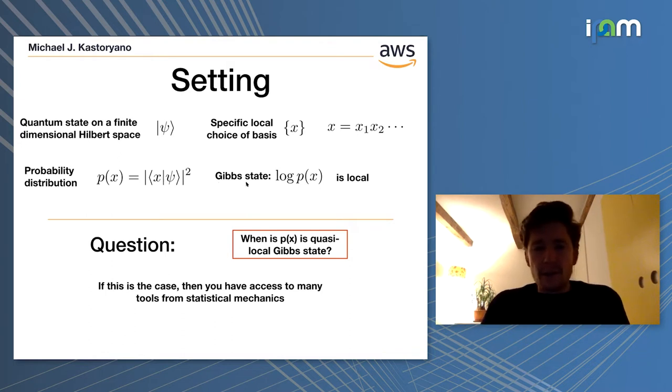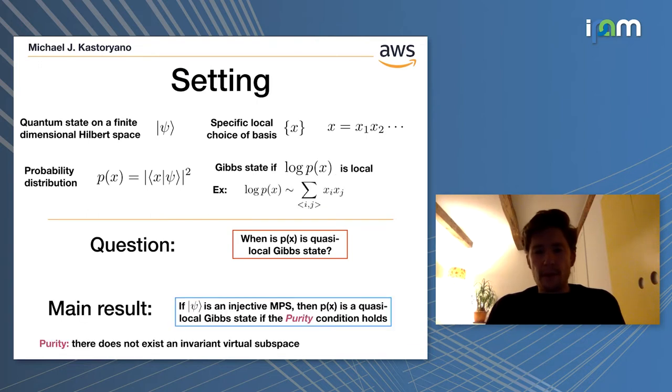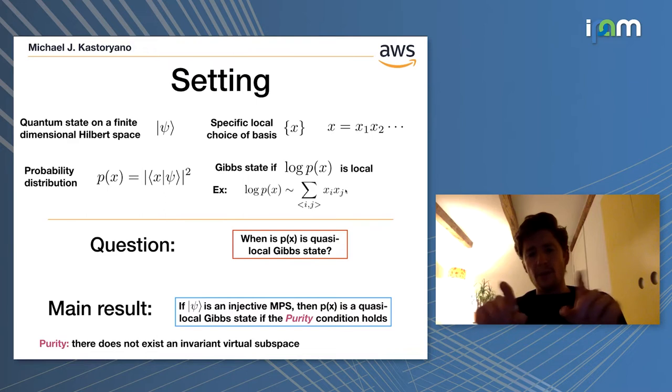Very loosely, I'm going to call a state Gibbsian if log of P is a local operator. The canonical example is the Ising model, where log of P is proportional to a sum of strictly local elements. More generally, the state is quasi-local if the coefficient in front of operators of larger support is exponentially decaying with the size of the support. This is a geometric notion of locality, not a computer science one.